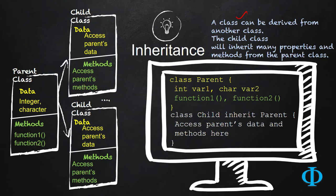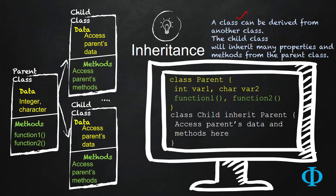For easy understanding of inheritance, you can think of it just like normal inheritance in real life. Consider a family where a son or daughter has their parents. The child can inherit many different properties from their parents — similar eyes, similar behaviour, or a similar way of talking. All these things we say the child got by inheritance. The exactly same concept applies in object-oriented programming.